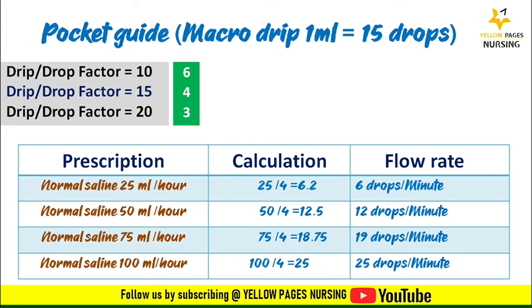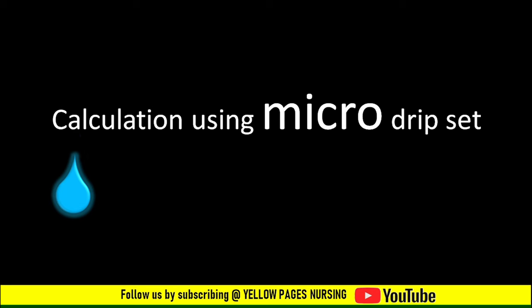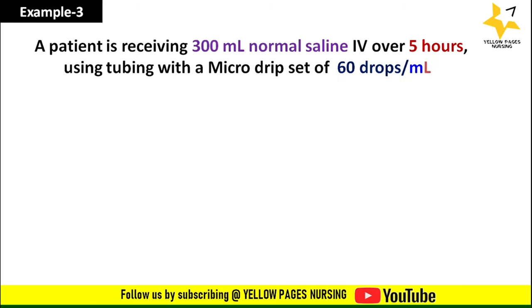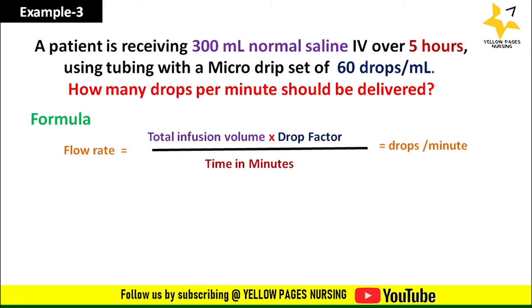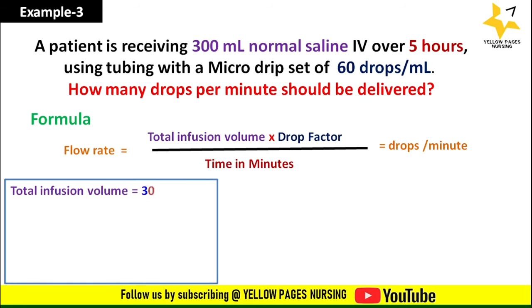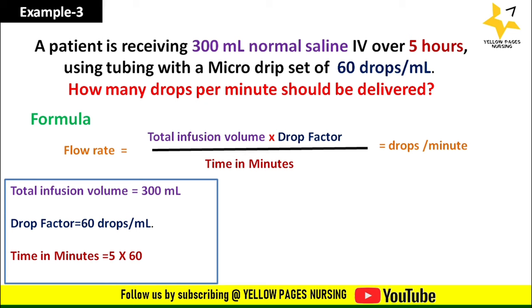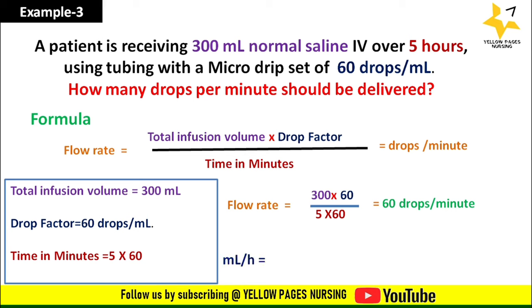Now let's look at calculation using a micro drip set where 1 ml contains 60 drops. Example: a patient is receiving 300 ml of normal saline IV over 5 hours using a micro drip set of 60 drops per ml. How many drops per minute should be delivered? Formula: flow rate = (total volume × drop factor) ÷ time in minutes = (300 × 60) ÷ (5 × 60) = 60 drops per minute.